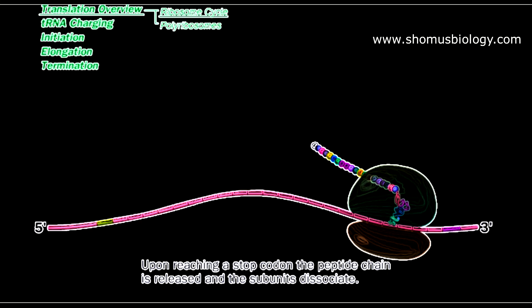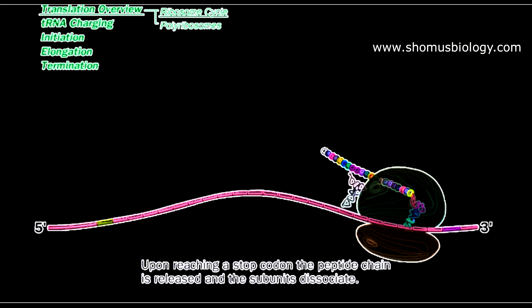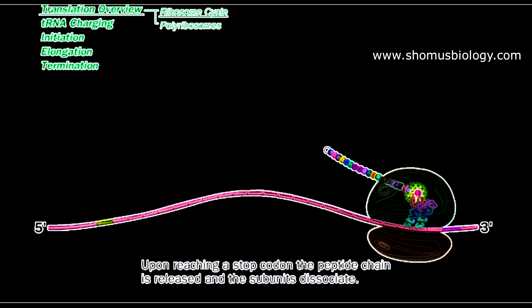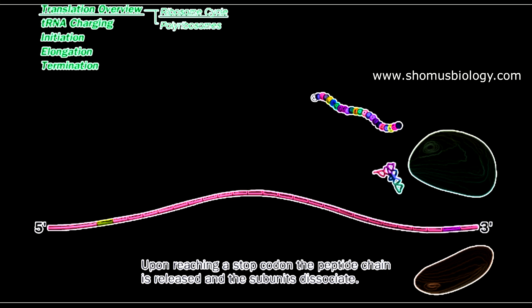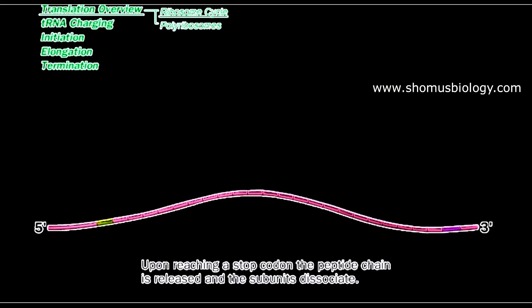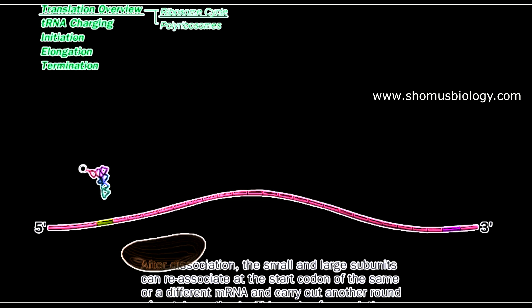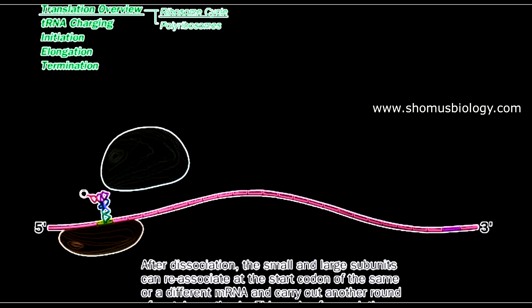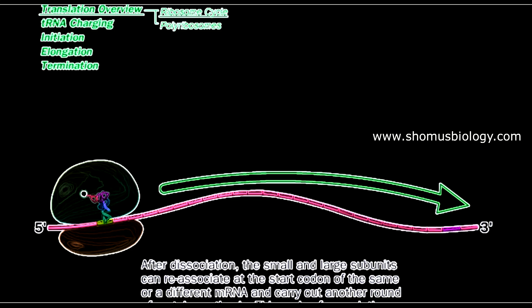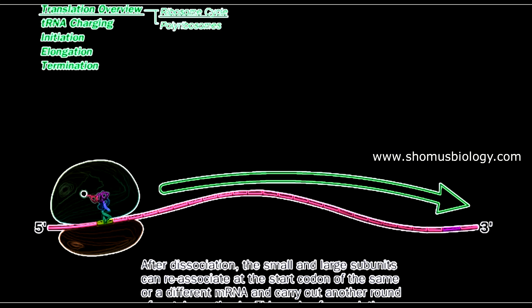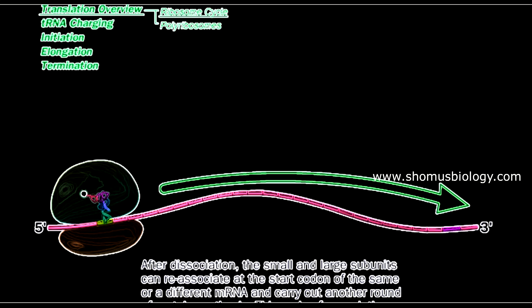This process continues until the ribosome reaches the stop codon, denoted in red on the mRNA. Once the stop codon is reached, ribosome recycling occurs and everything falls apart — large subunit, small subunit, mRNA are all released. After dissociation, the small and large subunits can reassemble at the start codon and repeat the process from 5 prime to 3 prime. This is the ribosome cycle, the process of protein synthesis in prokaryotes.